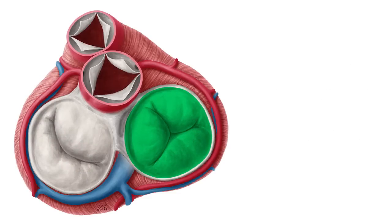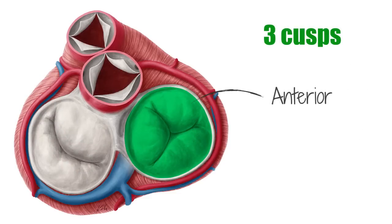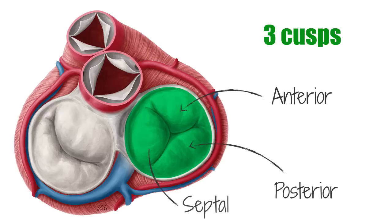The tricuspid valve has three cusps, each named for their location: an anterior, a posterior, and a septal cusp.